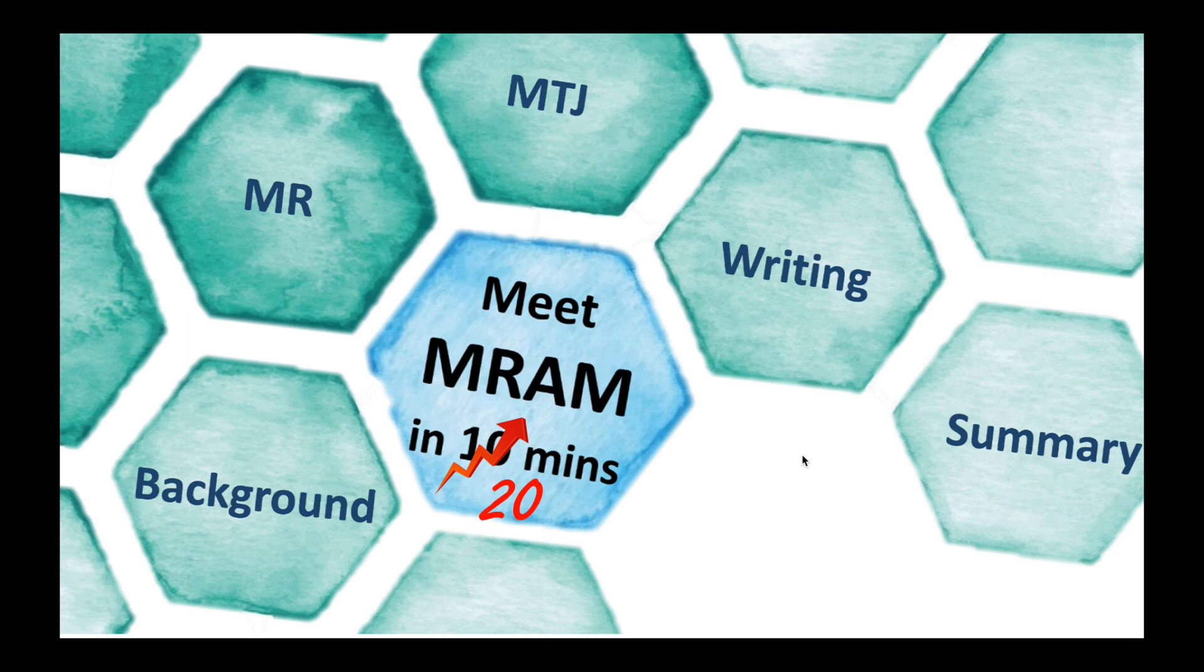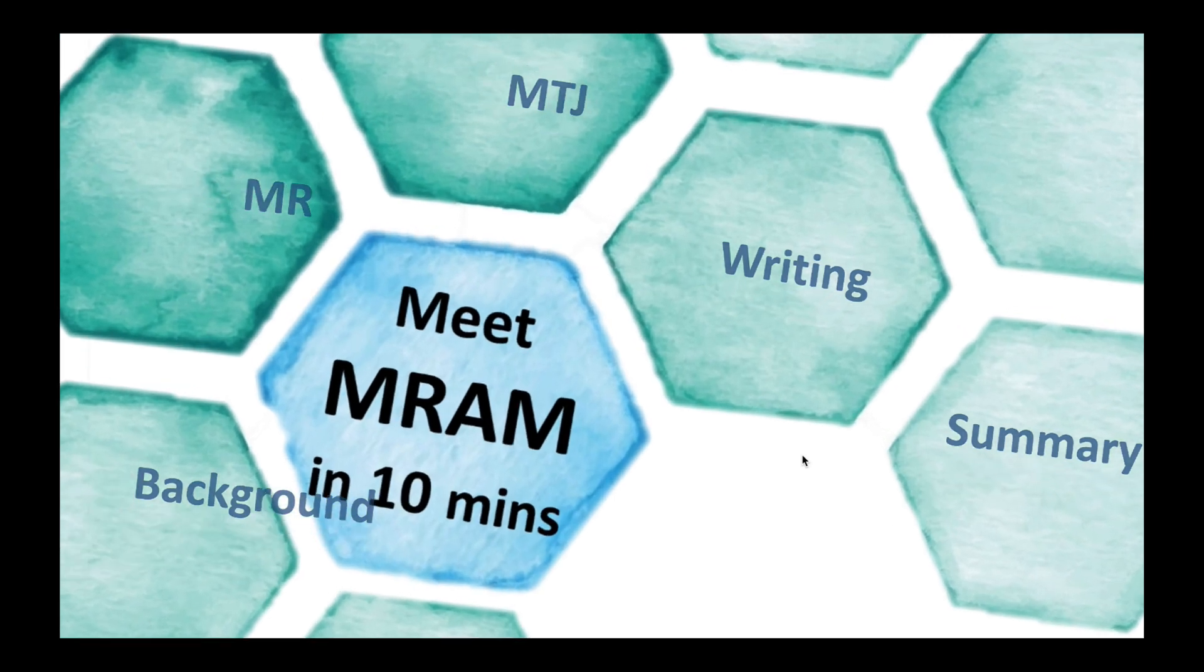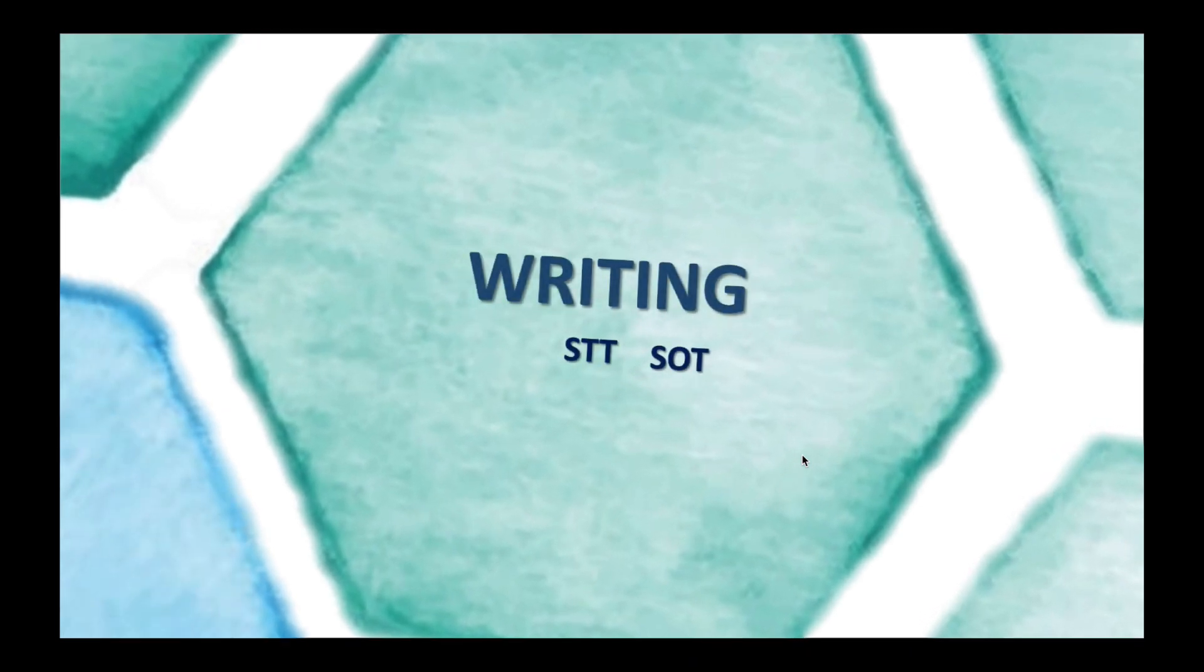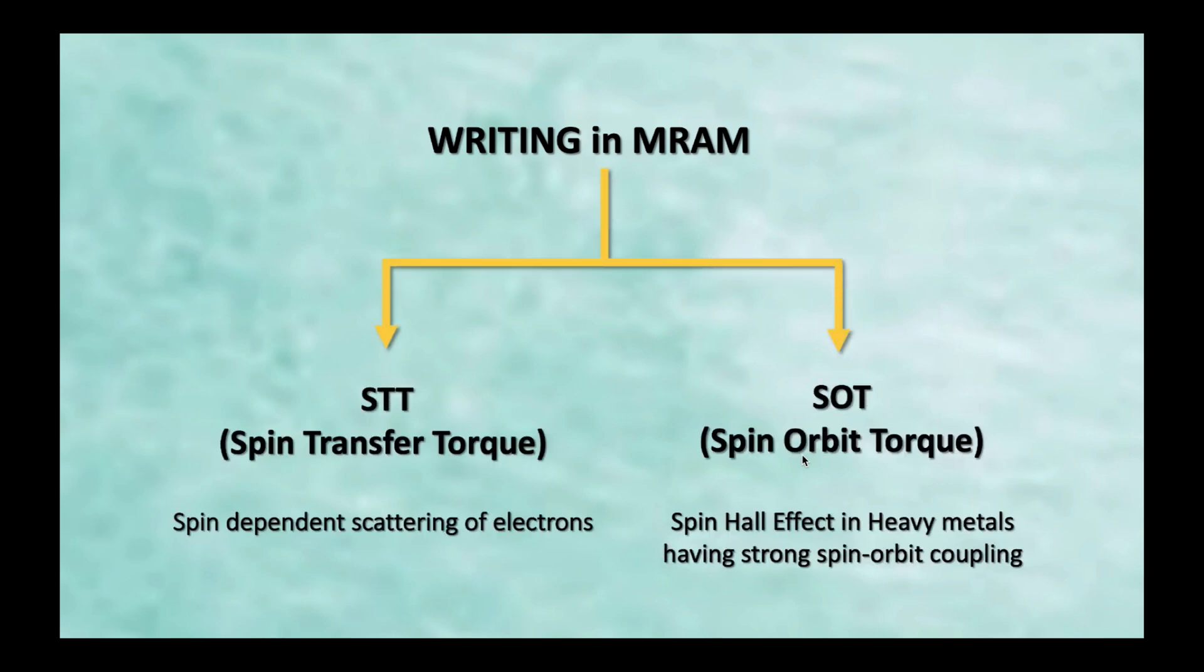So, I will talk about writing in MRAM. Let's start with what is writing first. Writing in any memory simply means changing the bit information from 0 to 1 or 1 to 0. So, in MRAM, we can do it either using field or using current. But, the writing using field is not desirable for practical purposes. So, we use current induced writing in MRAMs. And so, there are two different techniques to explain current induced writing in MRAMs. They are spin transfer torque or STT and the second one is spin orbit torque or SOT.